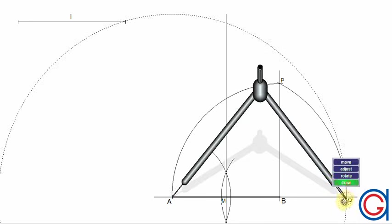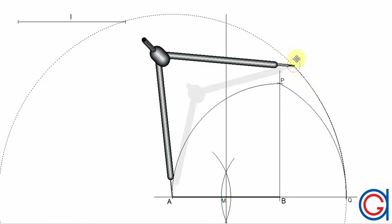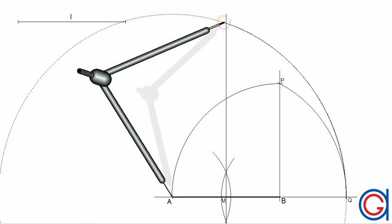So, the length AQ will be equal to the diagonal length. We will continue to draw our pentagon.